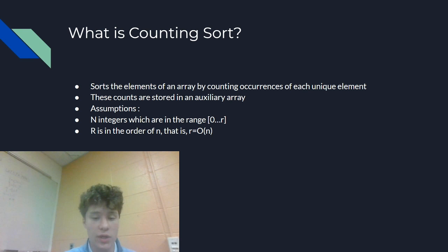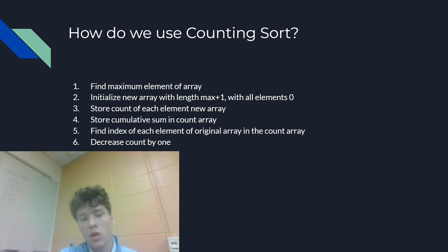How do we use counting sort? Here are the steps, and they may not make sense now, but I'm going to include an example and hopefully it makes a little bit more sense. Step 1, find the maximum element of the array.